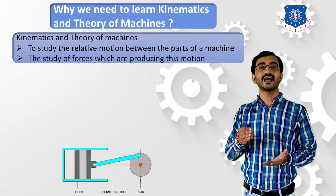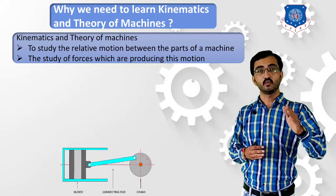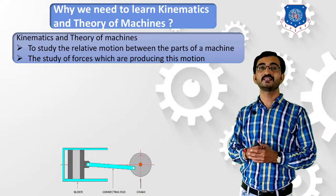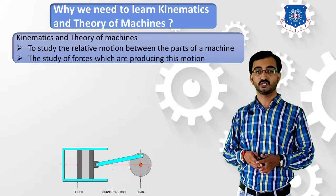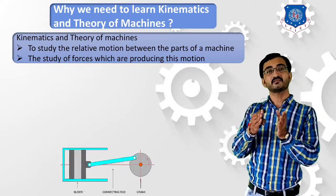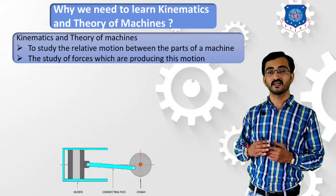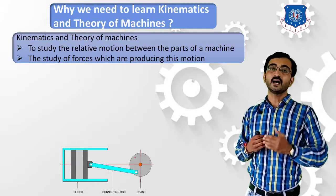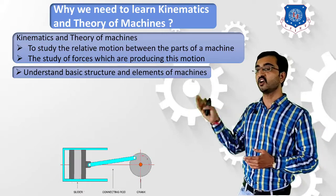In this subject we will learn how different types of motion can be produced and how these motions help develop various outputs. The second part of the subject involves studying the forces responsible for reciprocating or rotary motion. From various applications you will be able to identify which type of motion is occurring and how to produce different types of motion. The first outcome is understanding the basic structure and elements of a machine.